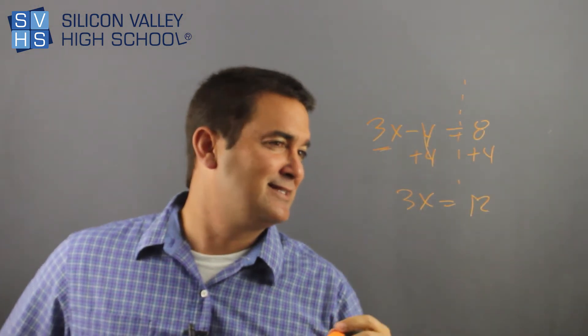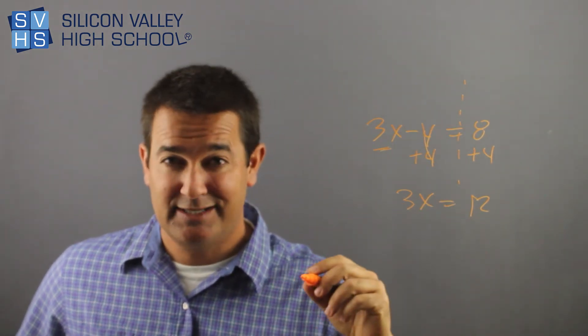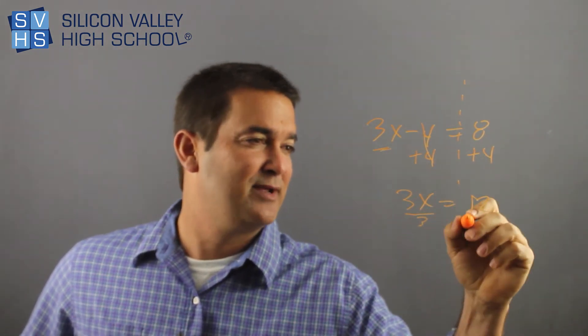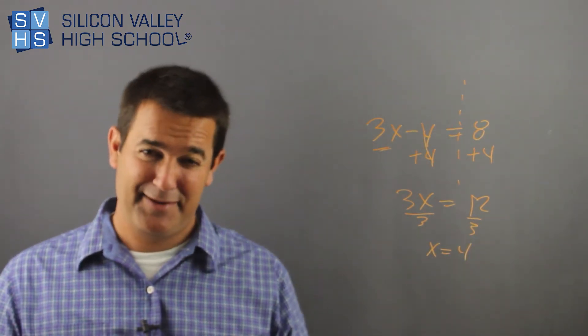So now I have 3x equals 8 plus 4 is 12. Oh, now look at this. Now the final step here is, how do I get x alone? I have 3 times x. I'm going to do the opposite of times. Divide. Divide by 3. Divide by 3. x equals 4. So that's a multi-step equation problem.